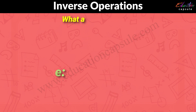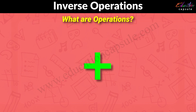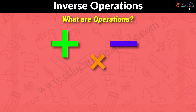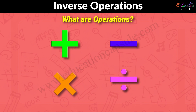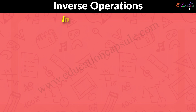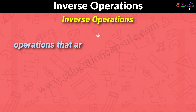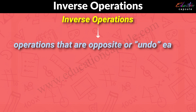Now, what are operations? Operations in maths are addition, subtraction, multiplication, and division. Now if we combine these two terms together, we get inverse operations. Inverse operations are operations that are opposite or undo each other.